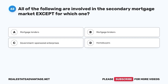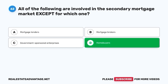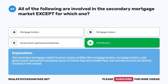Question 62. All of the following are involved in the secondary mortgage market, except for which one? A. Mortgage lenders. B. Mortgage brokers. C. Government-sponsored enterprises. D. Homebuyers. The correct answer is D. Homebuyers. The secondary mortgage market involves mortgage lenders, mortgage brokers, and government-sponsored enterprises such as Fannie Mae and Freddie Mac, but homebuyers are not directly involved in this market.